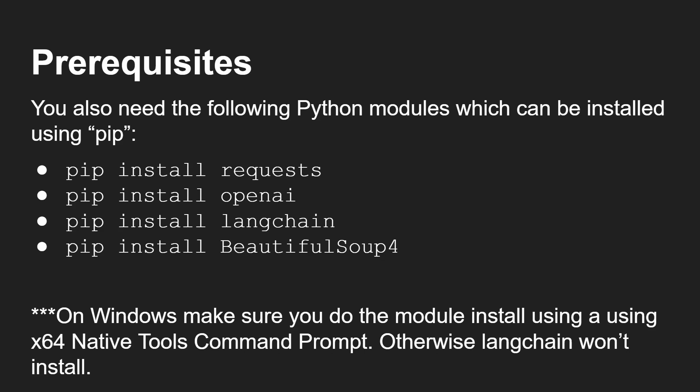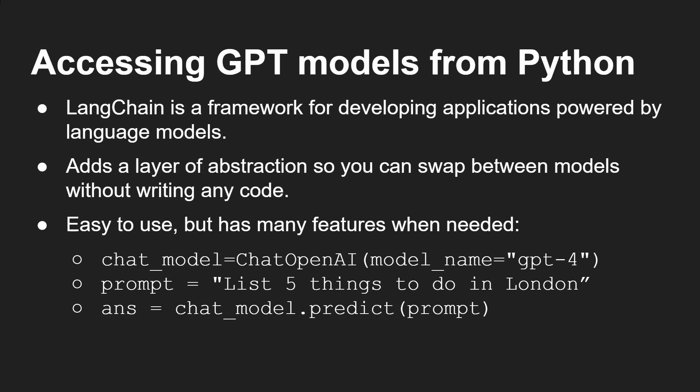Once you've got your Python environment set up and all the right things installed, we can start talking about how you actually use it to talk to a large language model over at OpenAI. We're going to be using LangChain — it's a framework for developing applications powered by language models. The great thing about it is it's an easy-to-use API, but also it adds a layer of abstraction. So you can swap — when other APIs are available you can very easily switch to a different API and your code still works, whether you're using OpenAI, Claude, or Llama.cpp.